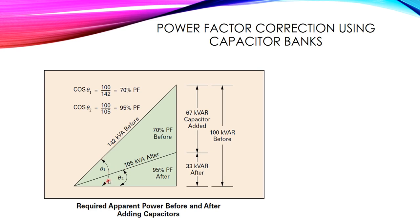The angle theta, whose cosine represents the power factor, was large before correction. After power factor correction, theta 2 is smaller, so cosine theta 2 is higher than cosine theta 1. Previously, 100 kilowatts divided by 142 kilovolt-amperes gave a 70 percent power factor. After adding the 67 kilovar capacitor bank, the apparent power from the grid is now 105, so the power factor improves to 95 percent.